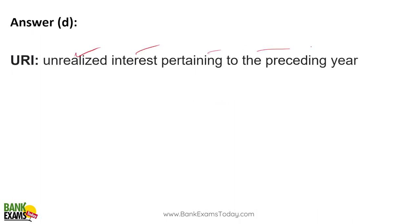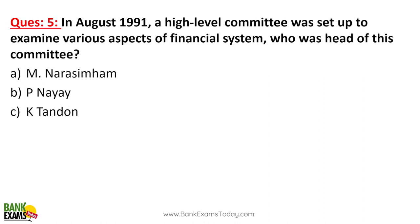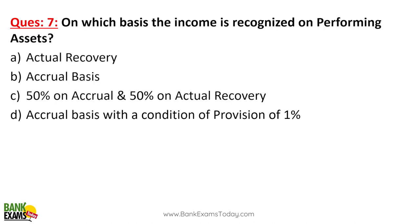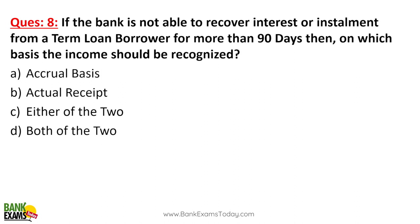URI is unrealized interest pertaining to the preceding years. In August 1991, a high-level committee headed by M. Narasimham was set up to examine various aspects of the financial system. This committee recommended that banks should adopt uniform accounting practices for income recognition and bad debt provisioning. Income on performing assets is recognized on an accrual basis. If a bank cannot recover interest or installments from a term loan borrower for more than 90 days, income should be recognized on an actual receipt basis.